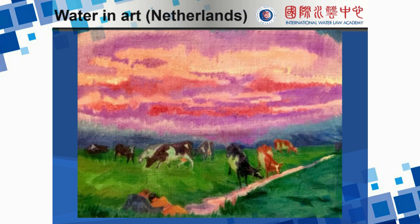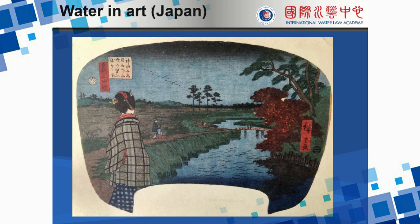So if you look for example at this painting — it's a painting of a Dutch master from some time ago — it shows cows drinking from a freshwater resource, a little pond or lake. But the same thing you can see everywhere. So this is a painting from Japan, and here you also see a river as it features in people's daily lives. And as you can see very clearly from this picture, a river or any freshwater resource has a kind of calming, soothing effect on people.